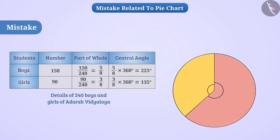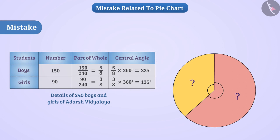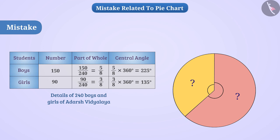Now let us see a mistake that happens while making a pie chart. Children forget to show what information is being represented by different sectors. Because of this, what is represented by each sector cannot be determined, making it difficult to get information. Therefore, it is necessary to write the information represented on all sectors of the pie chart.